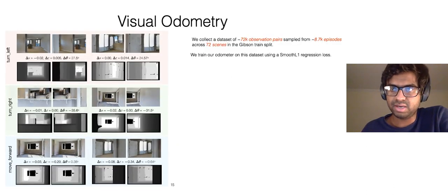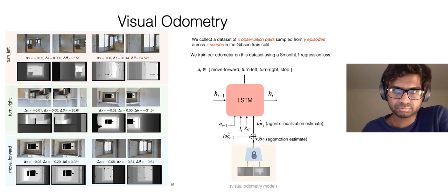Following this protocol, we collect a dataset of 72k observation pairs sampled from 8,700 episodes across 72 scenes in the Gibson train split. We train our odometer on this dataset using a smooth L1 regression loss. Once pre-trained, our odometer is kept frozen and used with the agent's policy for navigation.